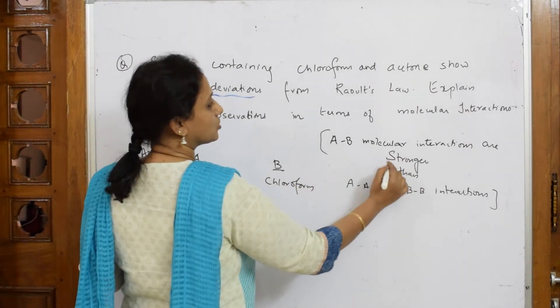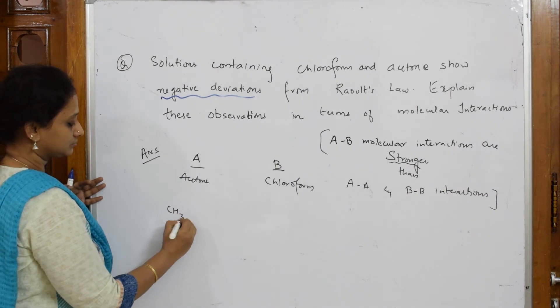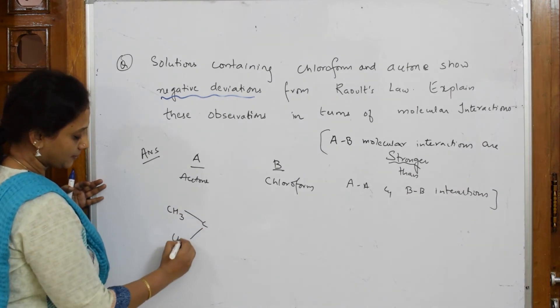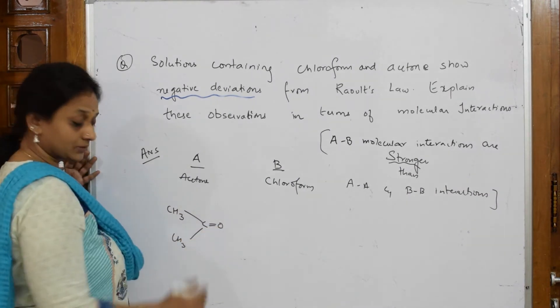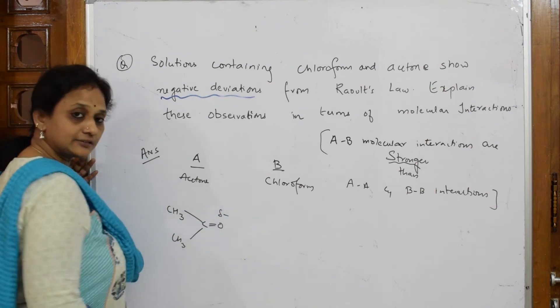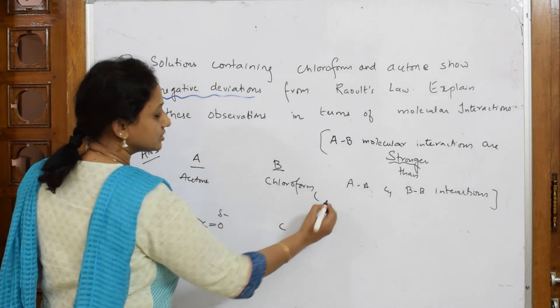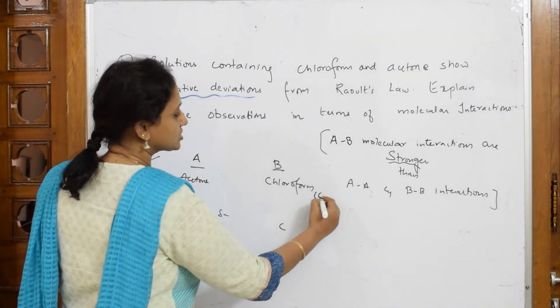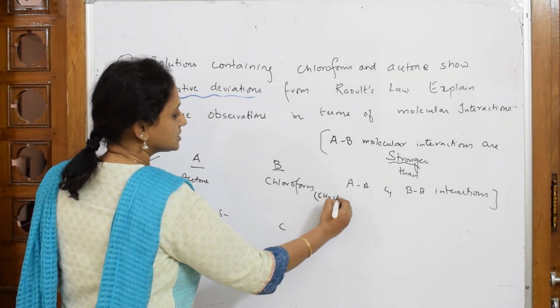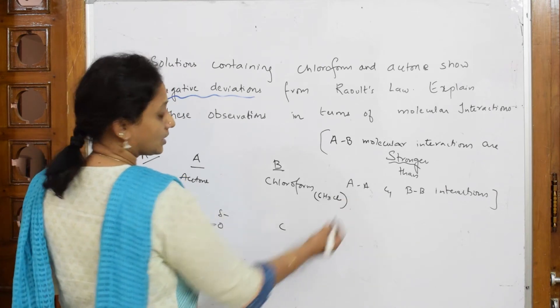Let's write acetone here and chloroform. Now what am I trying to do? I'm going to show the interaction is stronger. I have to show this. This is your acetone - oxygen is partially negative.